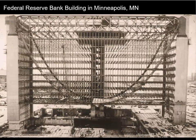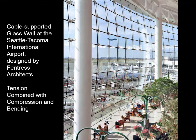In the case of the Federal Reserve Bank, the suspension structure is supported by compression in the towers. They support the ends of the suspension elements against the force of gravity, and in compression in the truss across the top, which provides the horizontal force to keep the suspension elements from pulling the tops of the towers inward. In the case of the Seattle-Tacoma Airport, the cable wall is made possible by compression action in the columns and by bending action in the cantilevers reaching out to support the cables at the top. That summarizes our discussion of predominantly tensile structures.